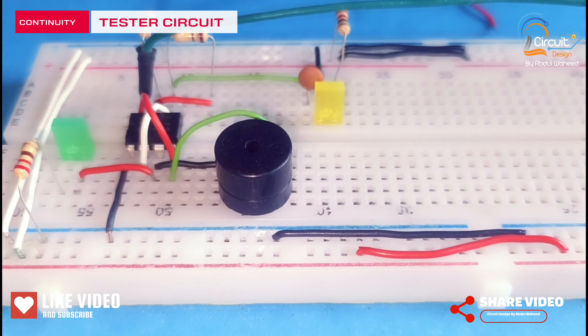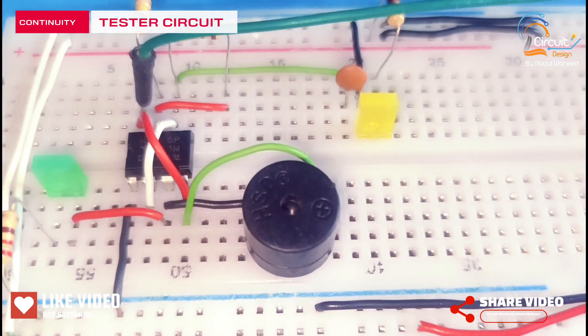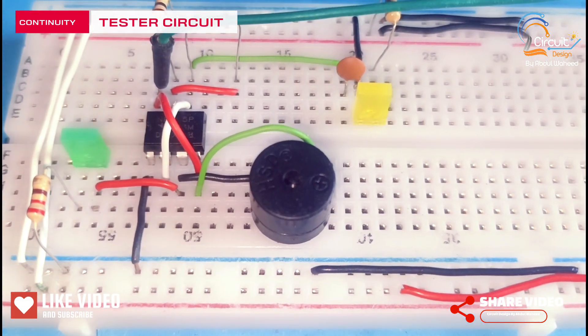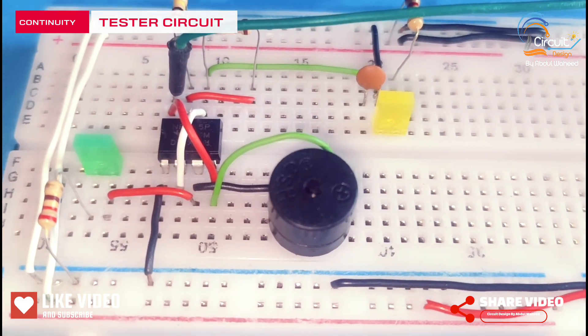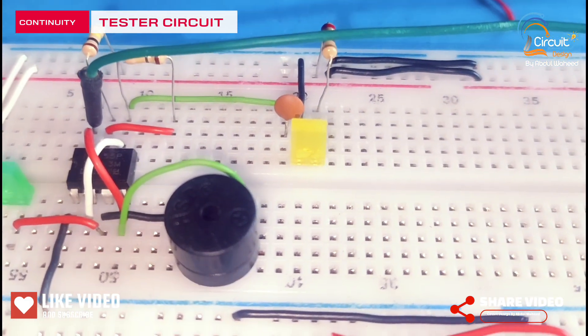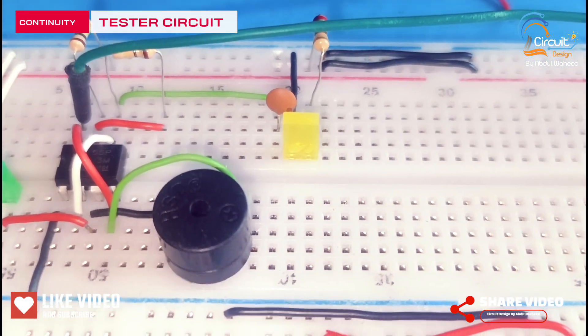In this circuit I use an NE555 timer, buzzer, and 2 LEDs. Green LED is used for output indication. Yellow LED is used for power indication.